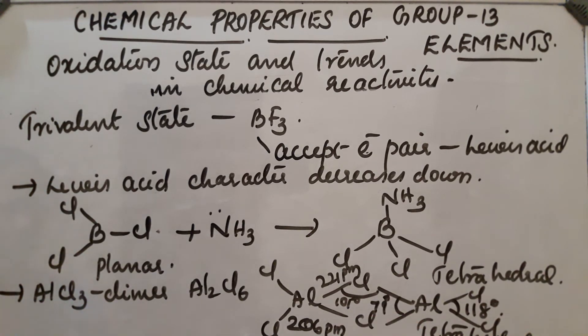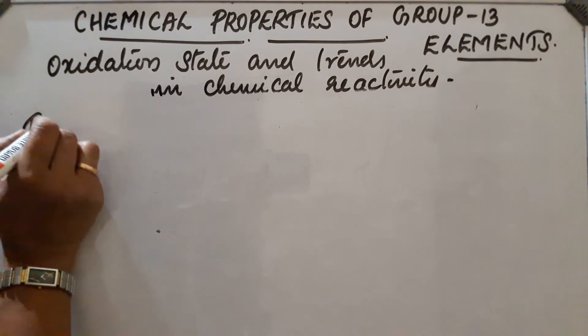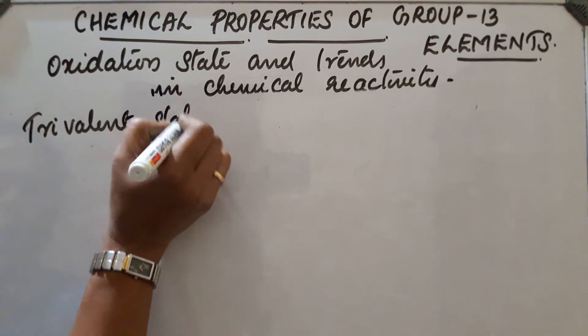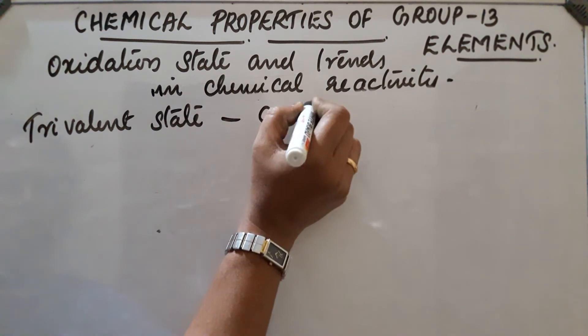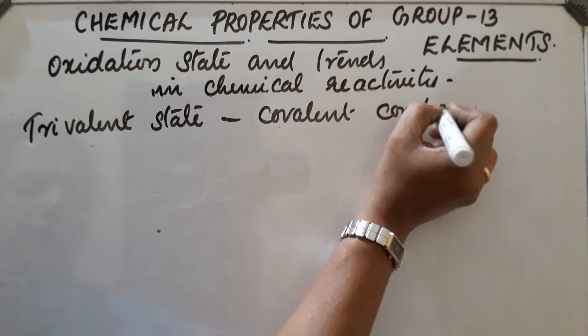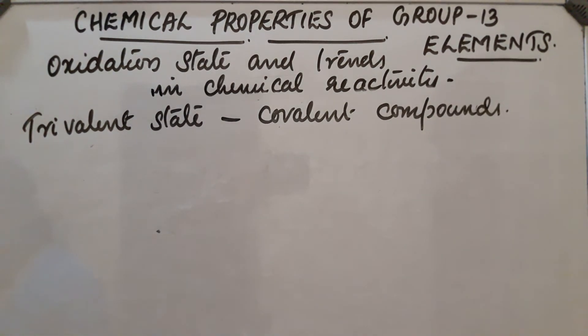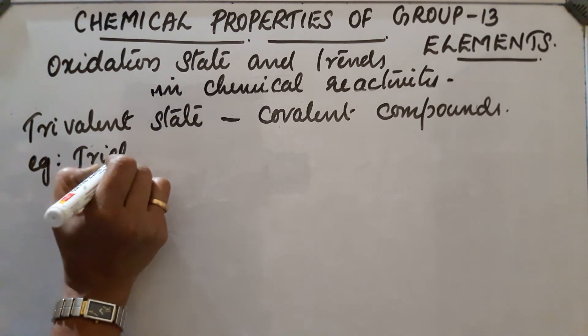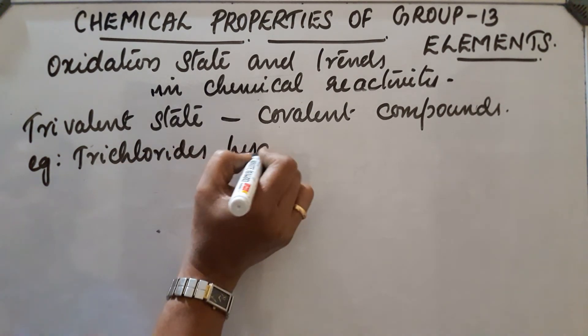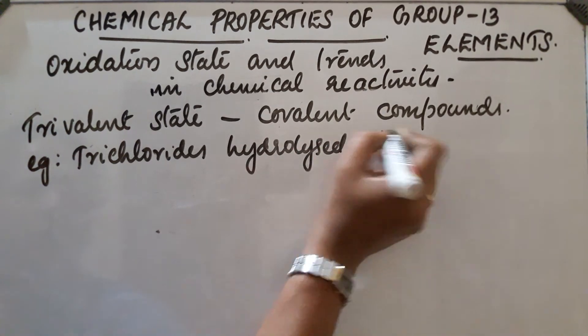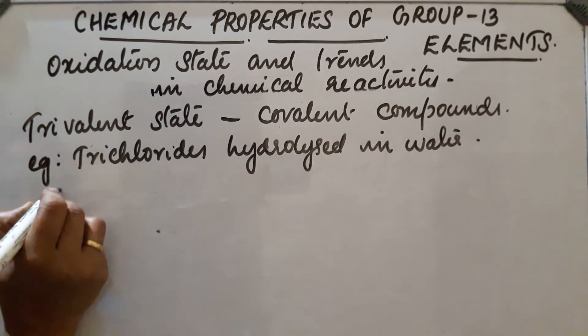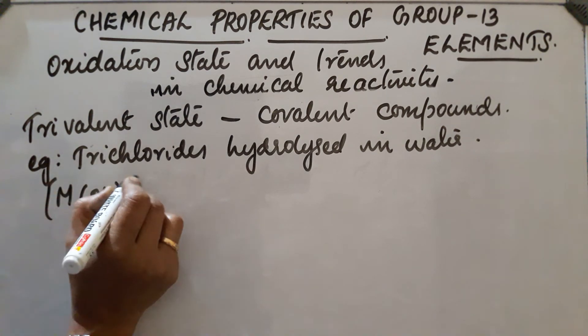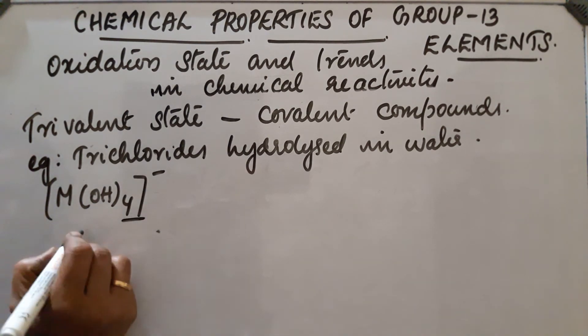Next, in trivalent state, most of the compounds form covalent compounds and they hydrolyze with water. These trihalides, the trichlorides in trivalent state, hydrolyze in water and form a tetrahedral compound - a tetrahedral species is obtained.